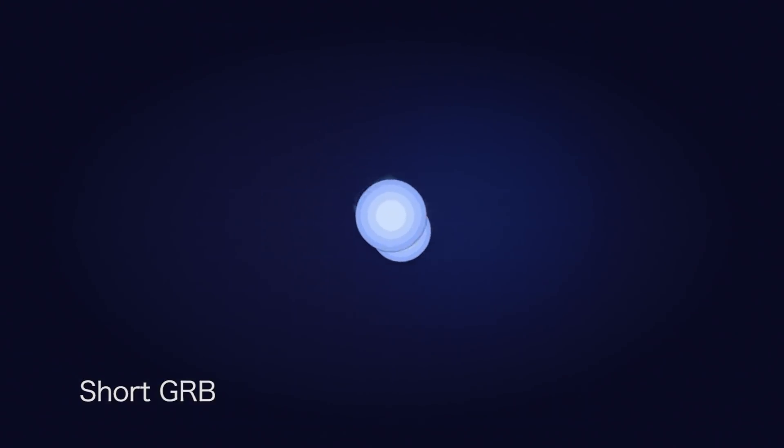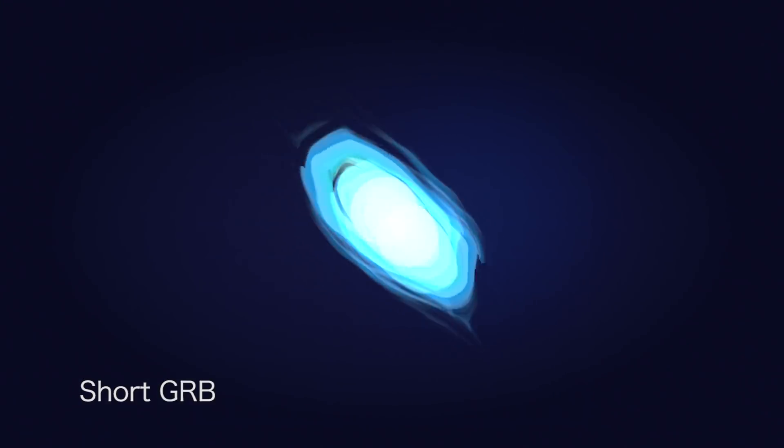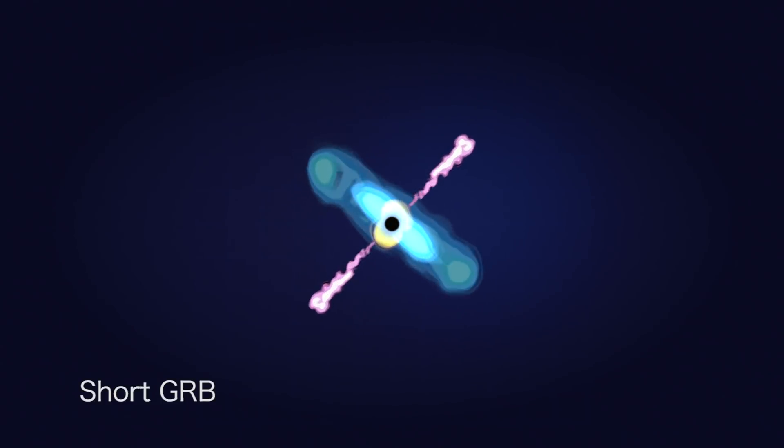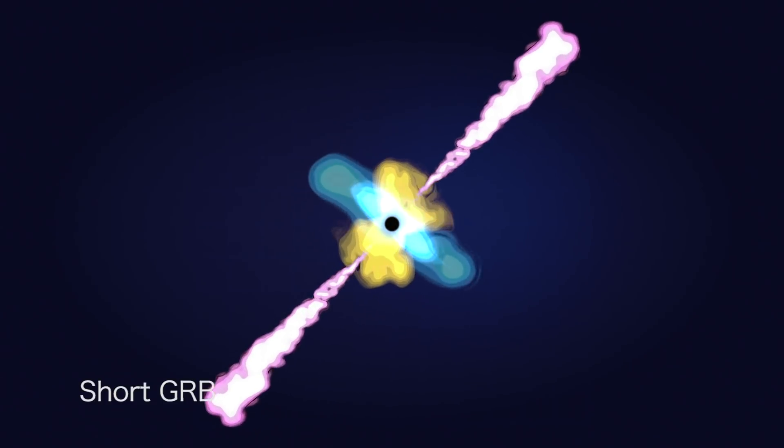Short GRBs, those lasting less than two seconds, are thought to occur when orbiting objects like neutron stars spiral together and merge.